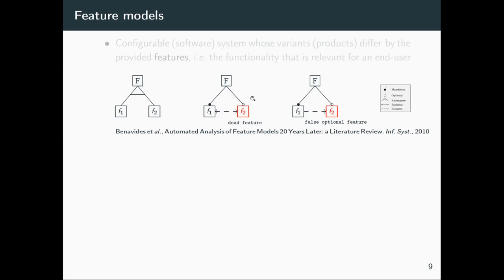We see F1 is a mandatory feature indicated by the filled bullet, and F2 is optional indicated by the open bullet. If F1 is mandatory — always present in any product — then F2 cannot be present due to the excludes constraint, making F2 a dead feature. This is easy to see in a small model, but in industry models with hundreds or thousands of features, it's not obvious.